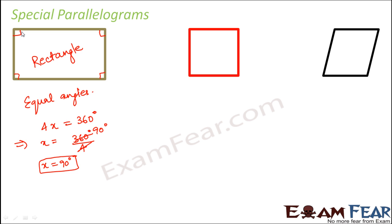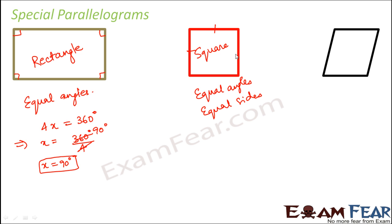In a rectangle, all angles are 90 degrees but the sides are not necessarily equal — opposite sides are equal, which is a property of the parallelogram, but not all sides. The next special parallelogram is a square. In a square we have equal angles like a rectangle, and also equal sides — all sides are equal and all angles are equal. That is why a square is an example of a regular quadrilateral, with each angle equal to 90 degrees.